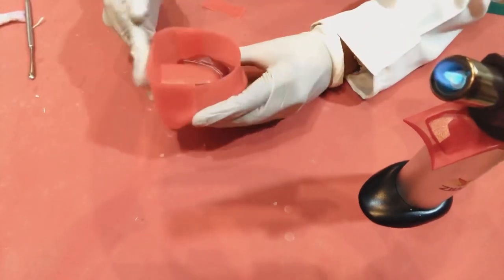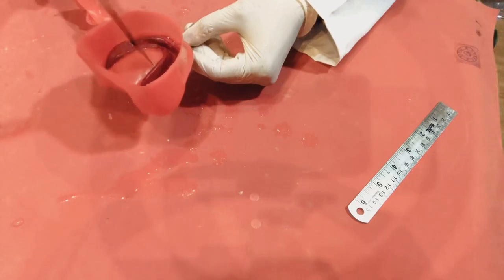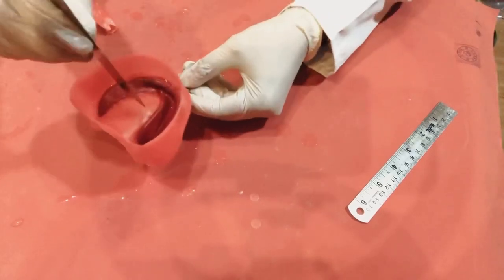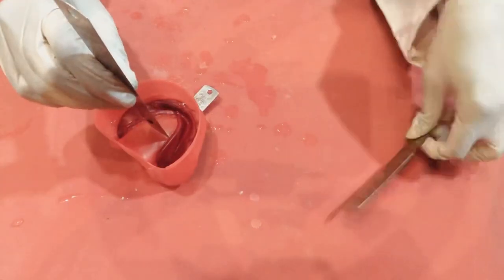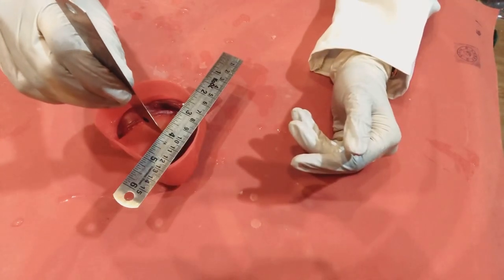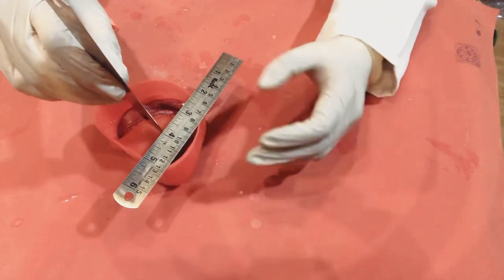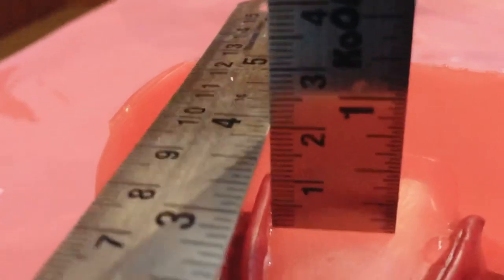Place another wax sheet posteriorly to complete the boxing. Make sure you have adequate height of boxing. Thickness of base of the cast should be 13 to 15 millimeters from its deepest point, so check it from the highest point on the lingual border. As mentioned earlier, think in reverse. Deepest point on the cast corresponds to the highest point on the impression.